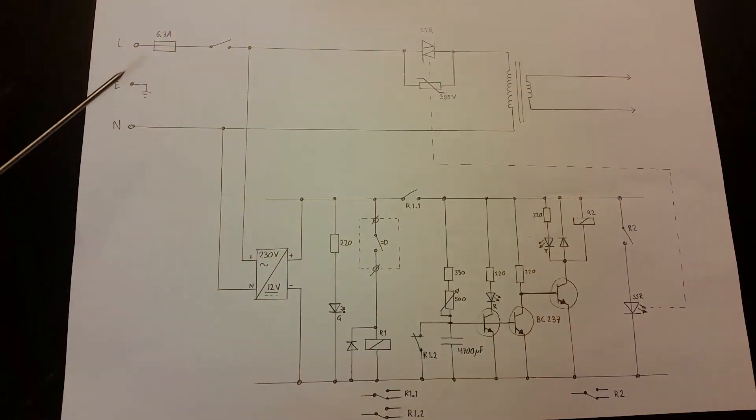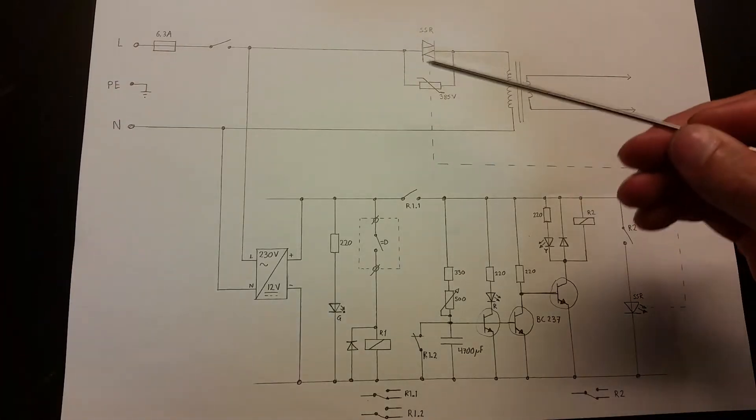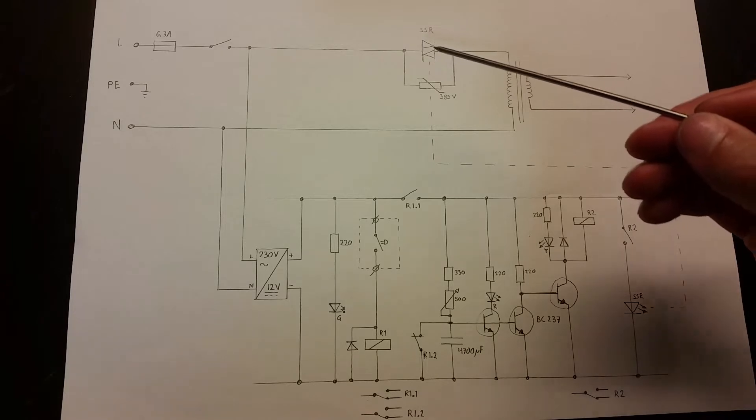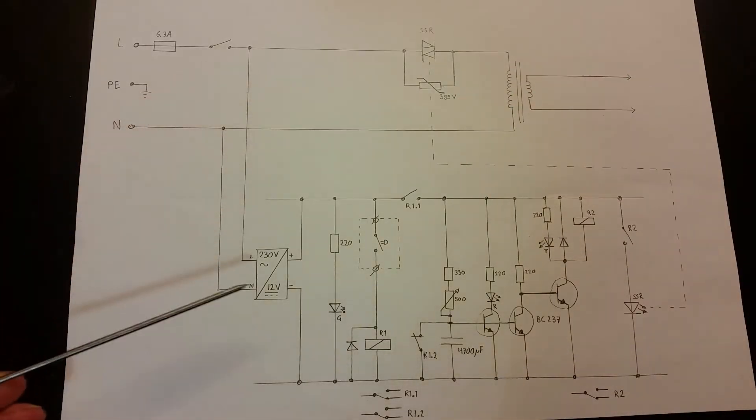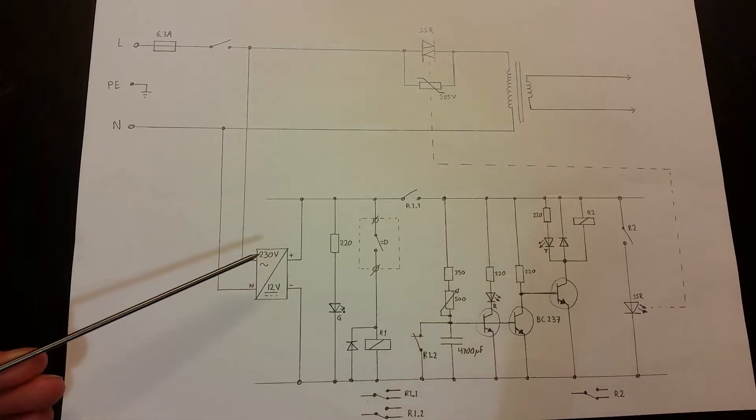Here's a schematic of it. Power comes in here, goes through a 6.3 amp fuse, through the switch, and you can go through here through this SSR solid state relay. And here's the microwave oven transformer which is modified - it turns back to neutral. And we got the power here going to this power adapter which gives 12 volts for the circuit.